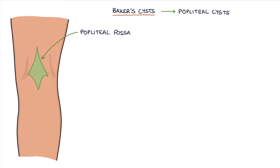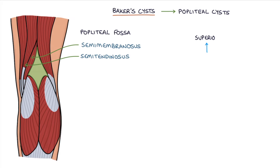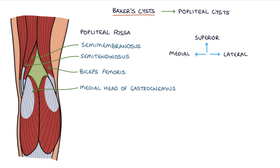The popliteal fossa is the diamond-shaped hollow area at the back of the knee, formed by four structures. The semimembranosus and semitendinosus tendons form the superior medial border. The biceps femoris tendon forms the superior lateral border. The medial head of the gastrocnemius muscle forms the inferior medial border, and the lateral head of the gastrocnemius muscle forms the inferior lateral border.